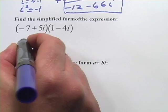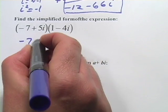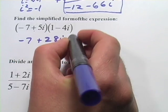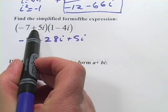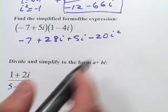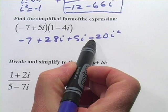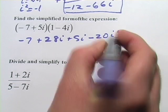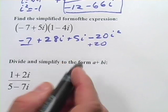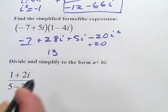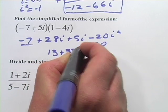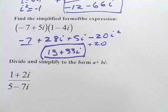First terms, -7 times 1 is -7. Outside, -7 times -4i is positive 28i. Inside terms, 5i times 1 is 5i. And last terms, 5i times -4i is -20i². But with our i squared, we're going to do the same trick. -20 times -1 is a positive 20. And let's see, we'll combine like terms. So positive 20 and -7, that's going to be a positive 13. And then we have 28 + 5i, so that's positive 33i. And we're done with that one.